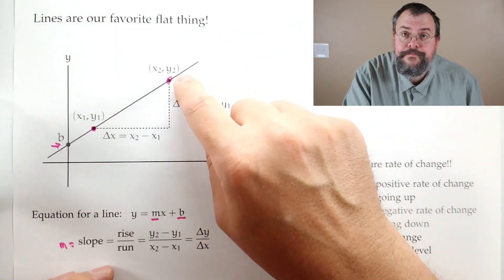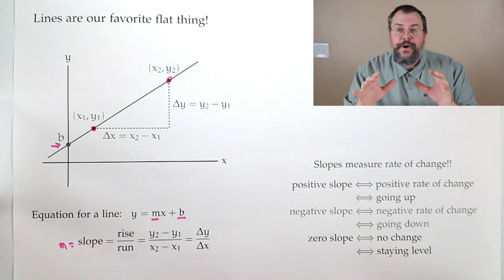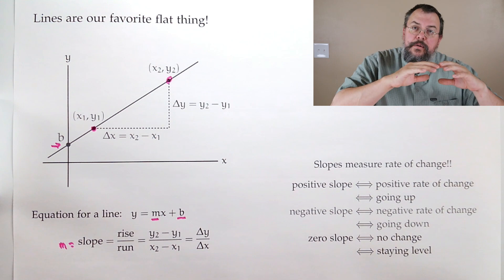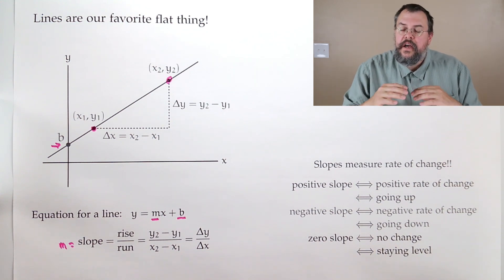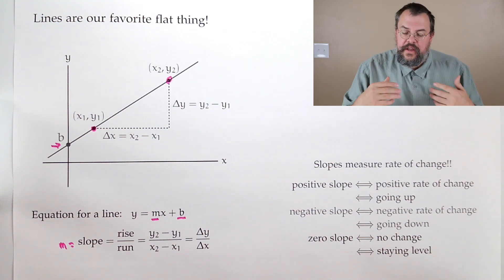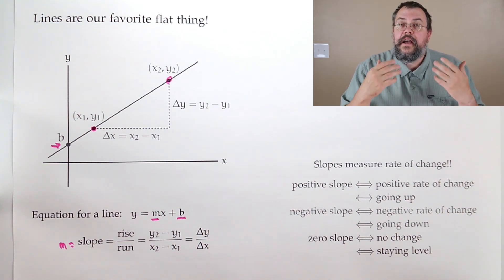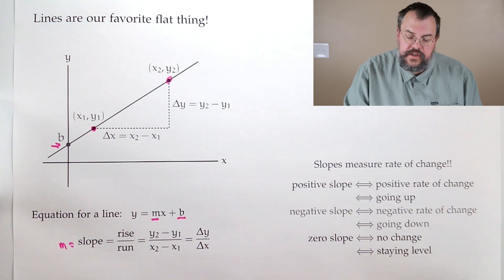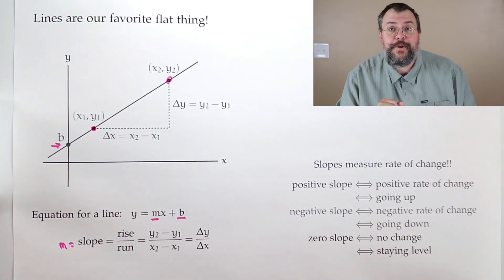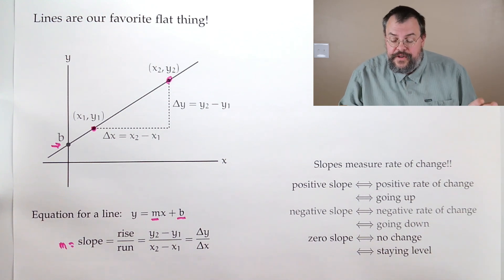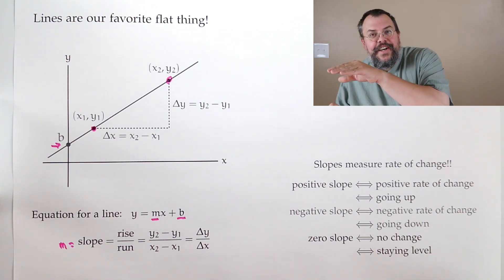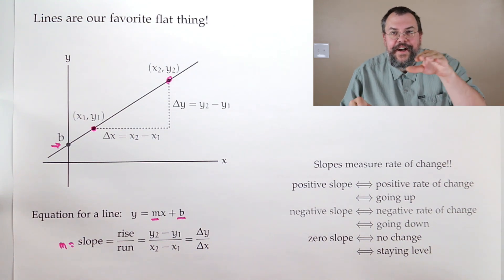A negative slope, well, that says if I increase my X value, my Y value will decrease. And in other words, a larger X results in a smaller Y. We say that's a negative slope, a negative rate of change. So that would be going downhill. And a very important slope is the zero slope. That's when there's no change at all. Well, you're going to stay on the level, not going to vary.